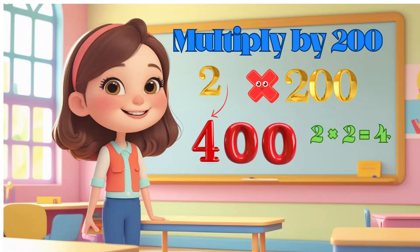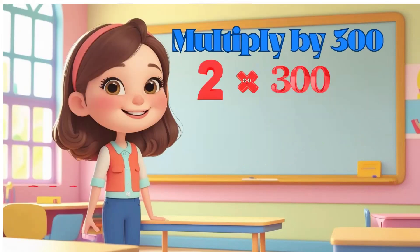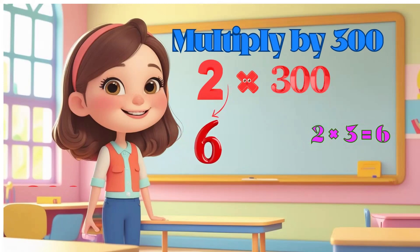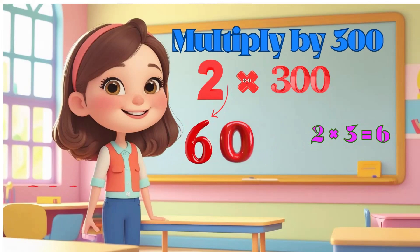Now multiply by 300: first, multiply your number by 3, then add two zeros. Example: 2 times 300 is equal to — 2 times 3 is equal to 6, now add two zeros equals 600.